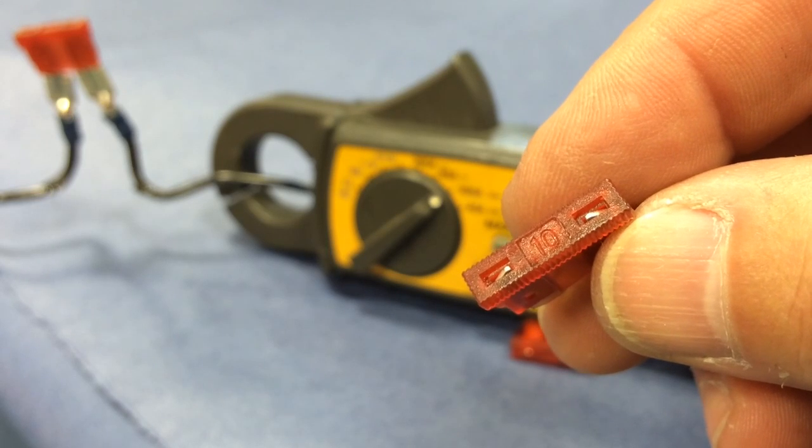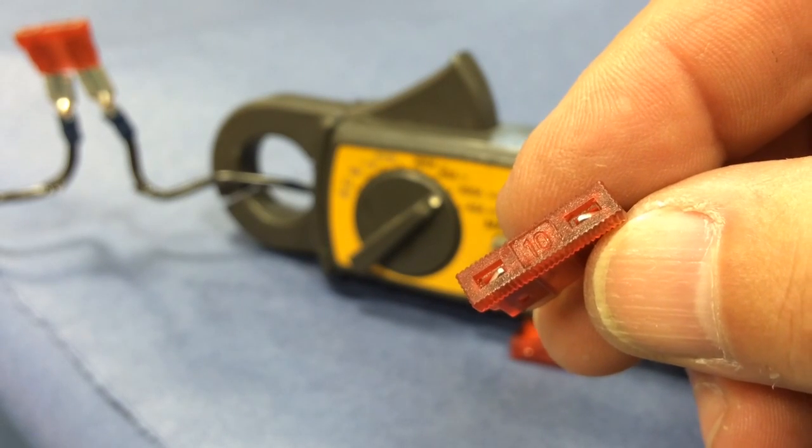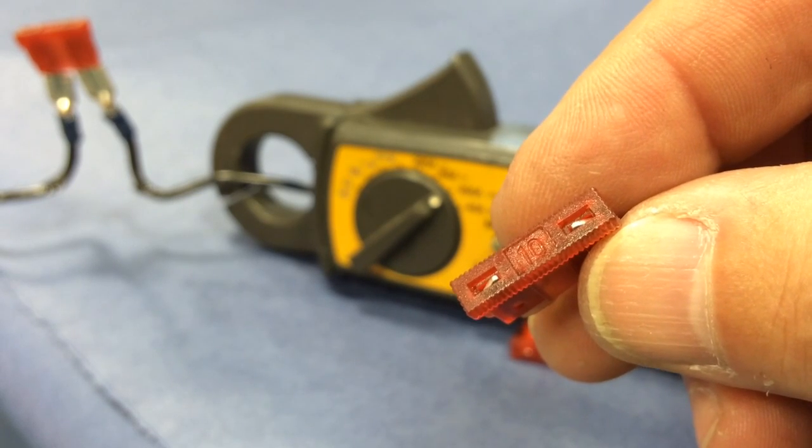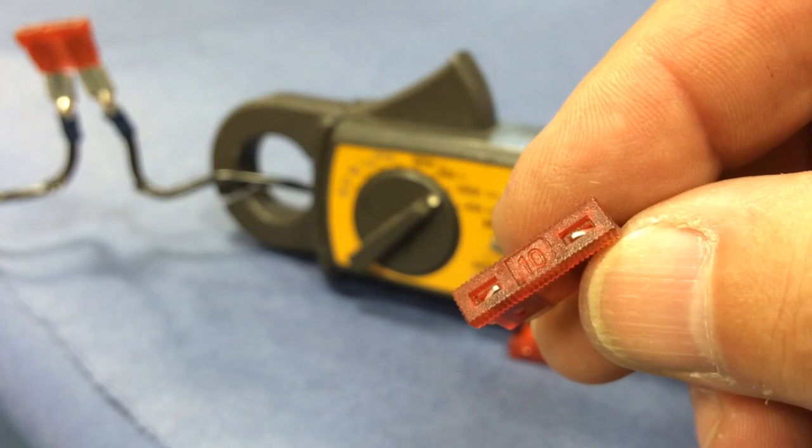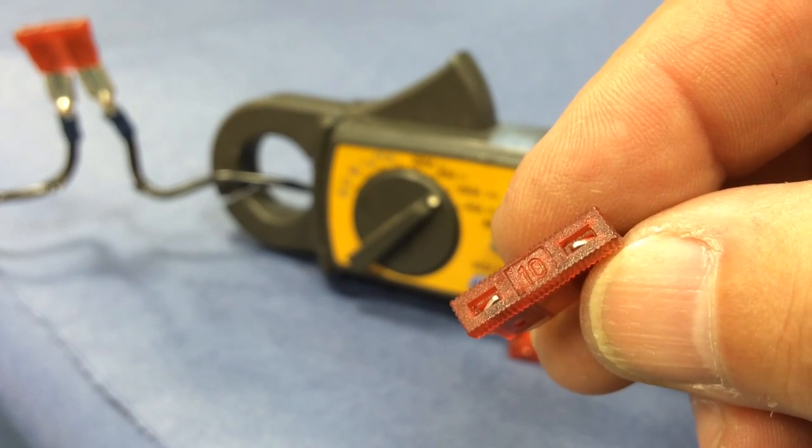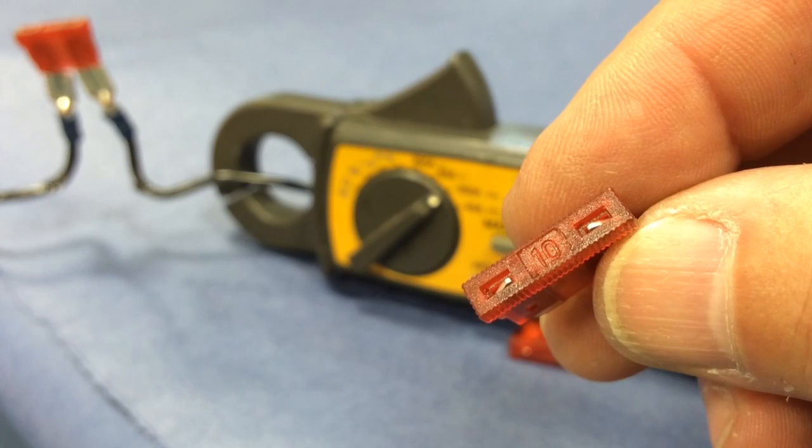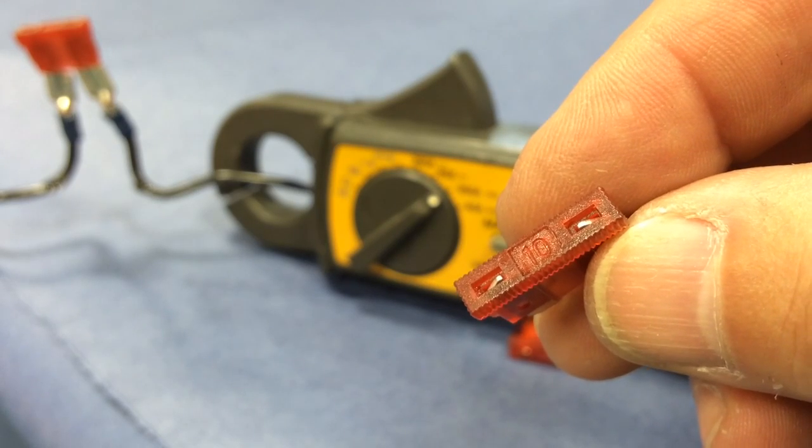This is a 10 amp fuse. What I have set up off camera is a carbon pile load tester, and the clamp on ammeter here is recording what I do. I've got a battery bank. I have plenty of current.